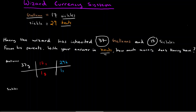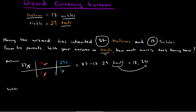Now we cancel units: galleons cancels in the numerator and denominator of the first conversion factor, and sickles cancels between the first and second conversion factors. This gives us 37 × 17 × 29 × knuts. Entering that into a calculator, 37 × 17 × 29 gives a final answer of 18,241 knuts, making sure to include the unit in our answer.